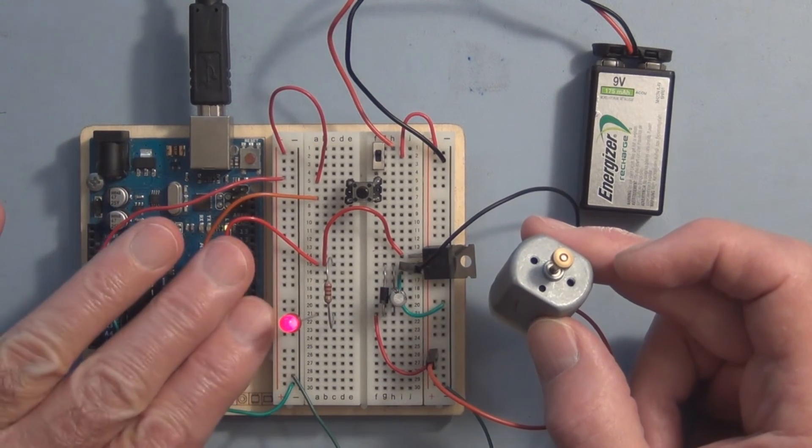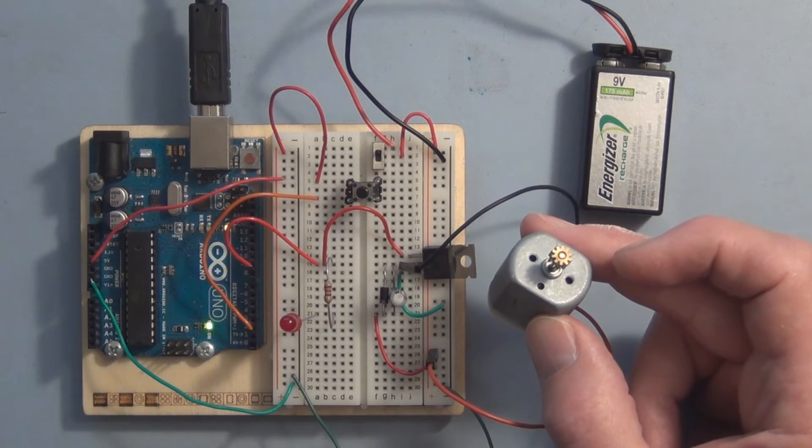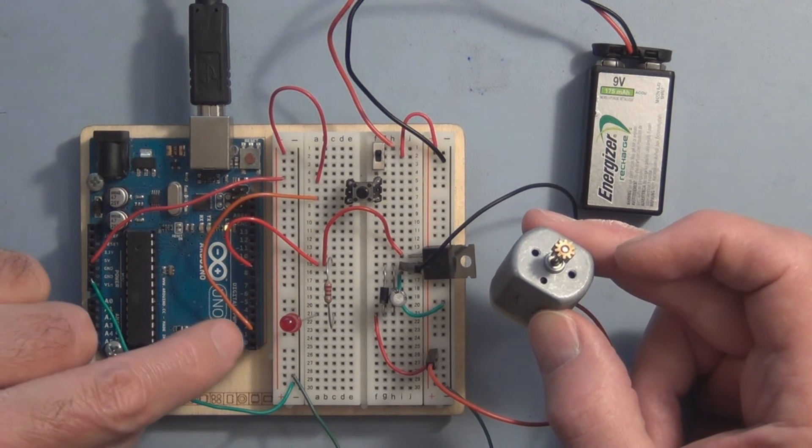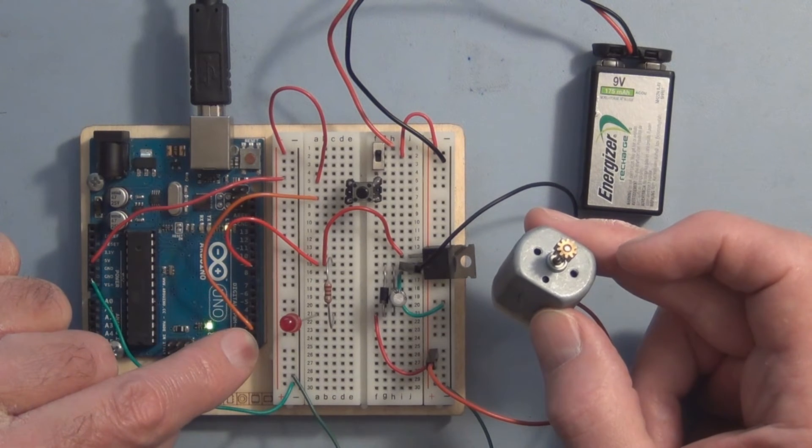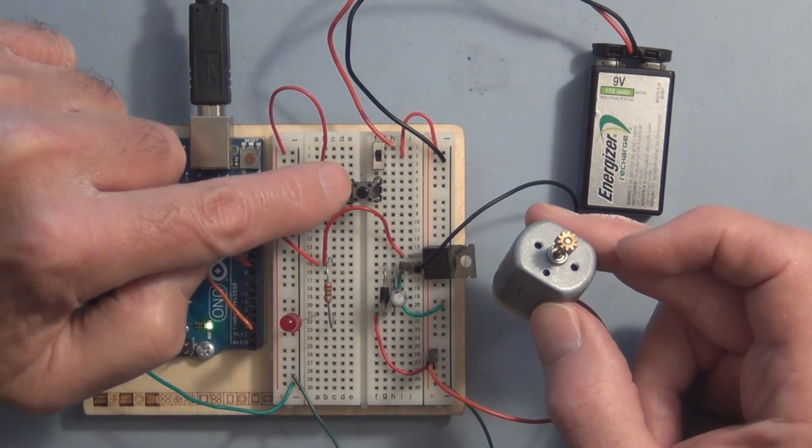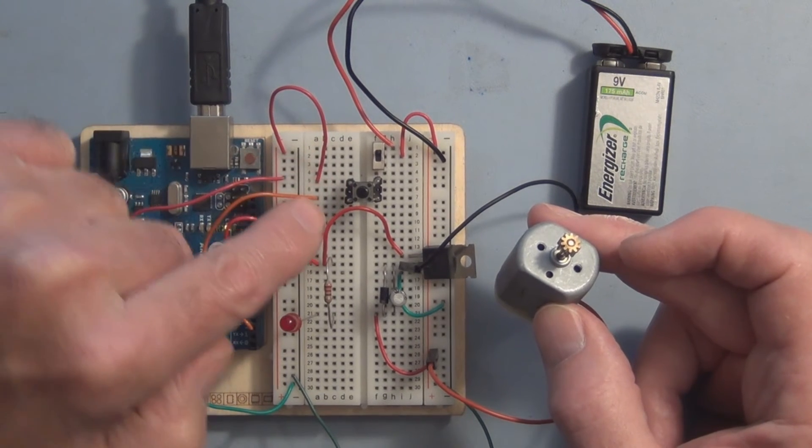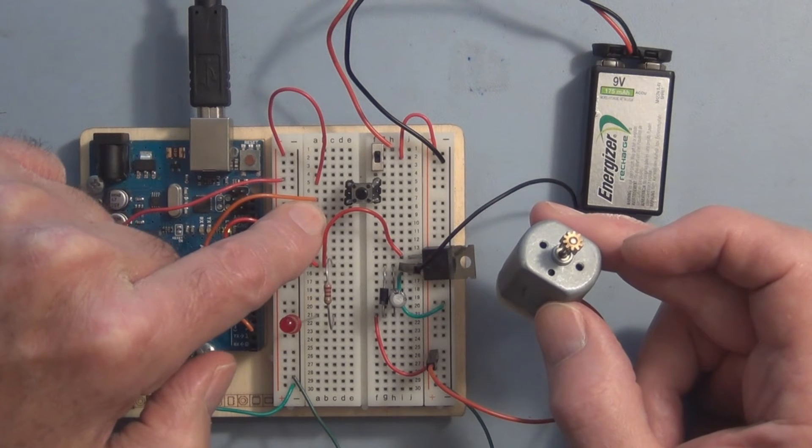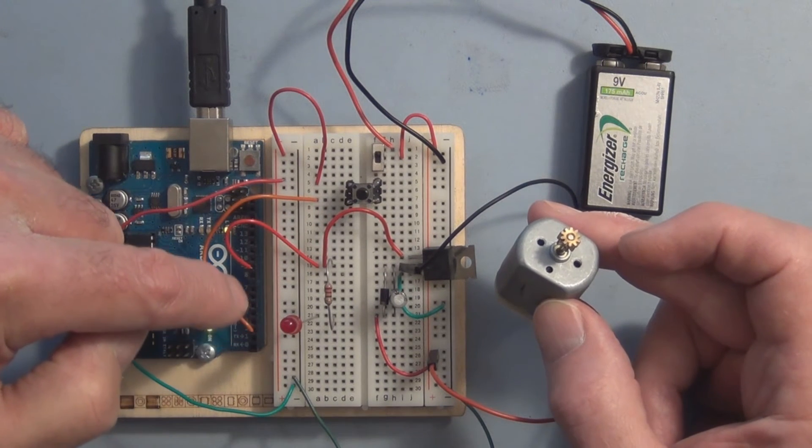But I can make it go off by just touching pin 2. So pin 2 is the input, and the problem here is that pin 2 is floating. When this button is pressed the five volts has access to the other side here and gets applied to pin 2.